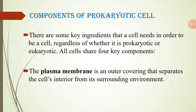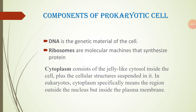If we see the components of the prokaryotic cell, we see some key ingredients that a cell needs in order to be a cell. Regardless of whether it is prokaryotic or eukaryotic, all cells share a few key components. First, the plasma membrane — an outer covering that separates a cell's interior from its surrounding environment. Second, DNA, which is the genetic material of the cell. Third, ribosomes, which are molecular machines that synthesize protein. And fourth, the cytoplasm, consisting of jelly-like cytosol inside the cell plus the cellular structures suspended in it. In eukaryotes, cytoplasm specifically means the region outside the nucleus but inside the plasma membrane.